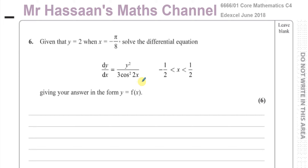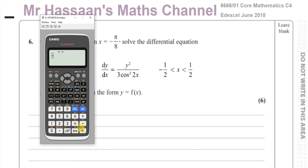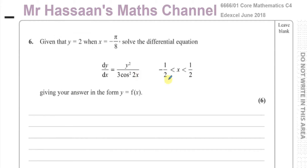It says: given that y equals 2 when x equals minus pi over 8, solve this differential equation: dy/dx equals y squared over 3 cosine squared 2x, and x has to be between minus one half and one half. All that means is the value of x you put into this should be between minus one half and one half — that's all. And the value we're using is minus pi over 8, which is indeed between those limits, so we're fine.